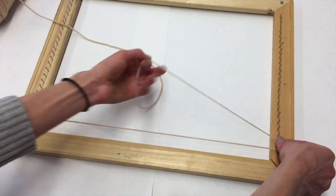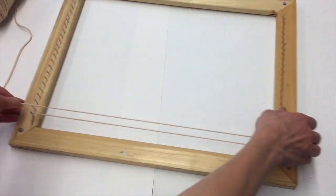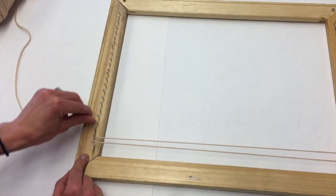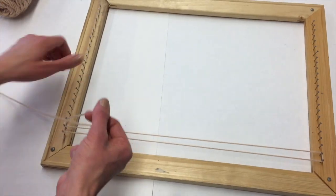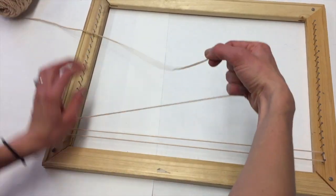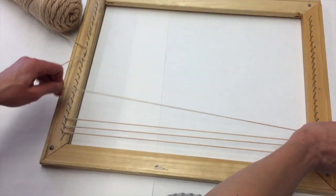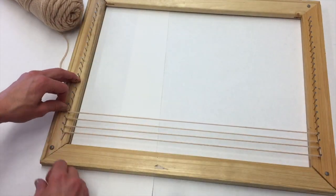Don't make the mistake of just wrapping it around one, it won't be even. Make sure you wrap it around two. On the opposite side I'm going to wrap it around the second and the third nail, and then go ahead and go across the other side. I'll continue wrapping two nails so that my warp string is evenly spaced.